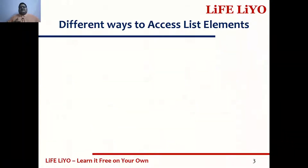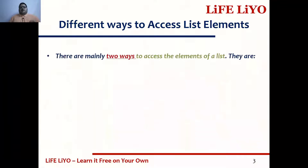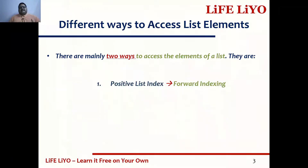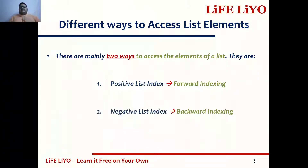Now, what are the different ways to access list elements? In Python, to access the elements of a list, we have two ways. One is positive list index, also known as forward indexing. The next one is negative list index, also known as backward indexing.